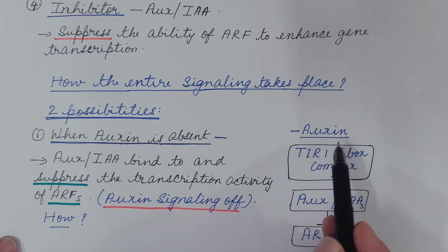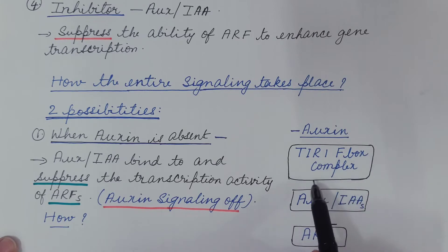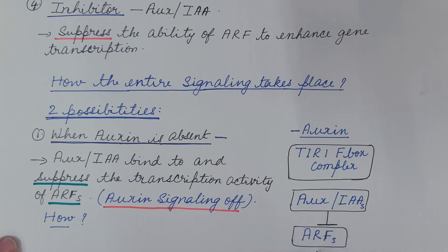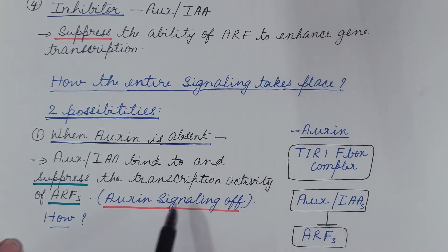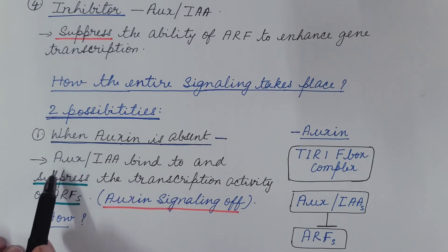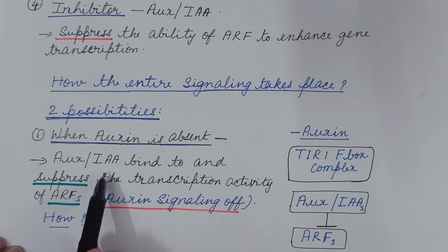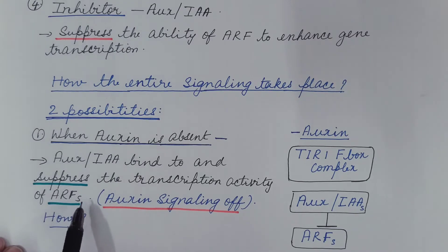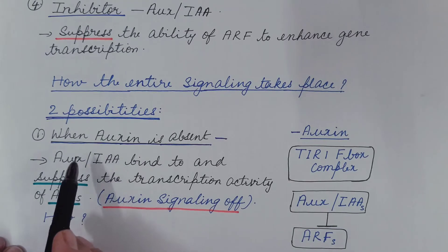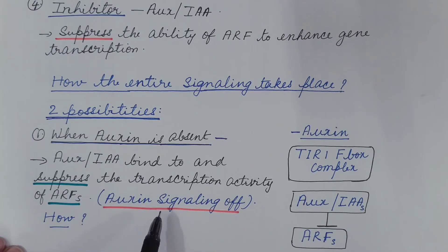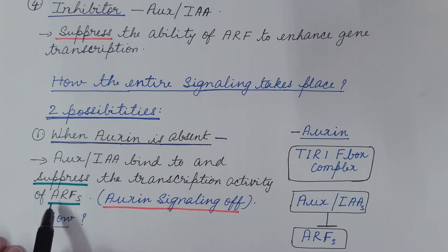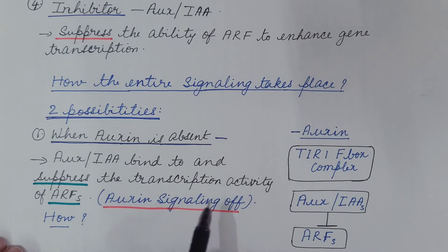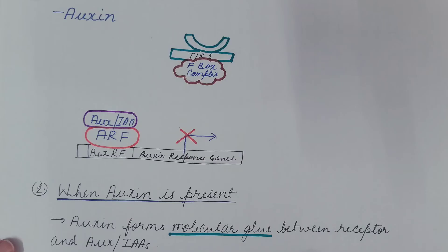When auxin is absent, it does not bind to the TIR1 F-box complex. The inhibitor AUX/IAA binds with ARF, the transcription factor, and suppresses or inhibits its activity — auxin signaling is off. When AUX/IAA is at the promoter with ARF, it recruits other factors to make modifications to the DNA structure, as a result of which ARF is not able to transcribe the genes.